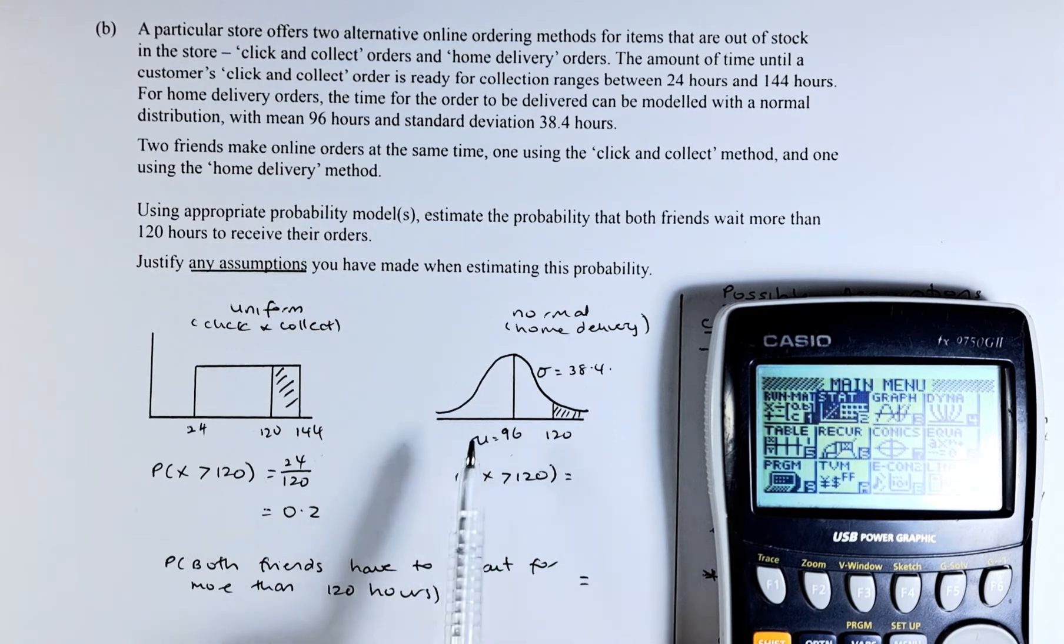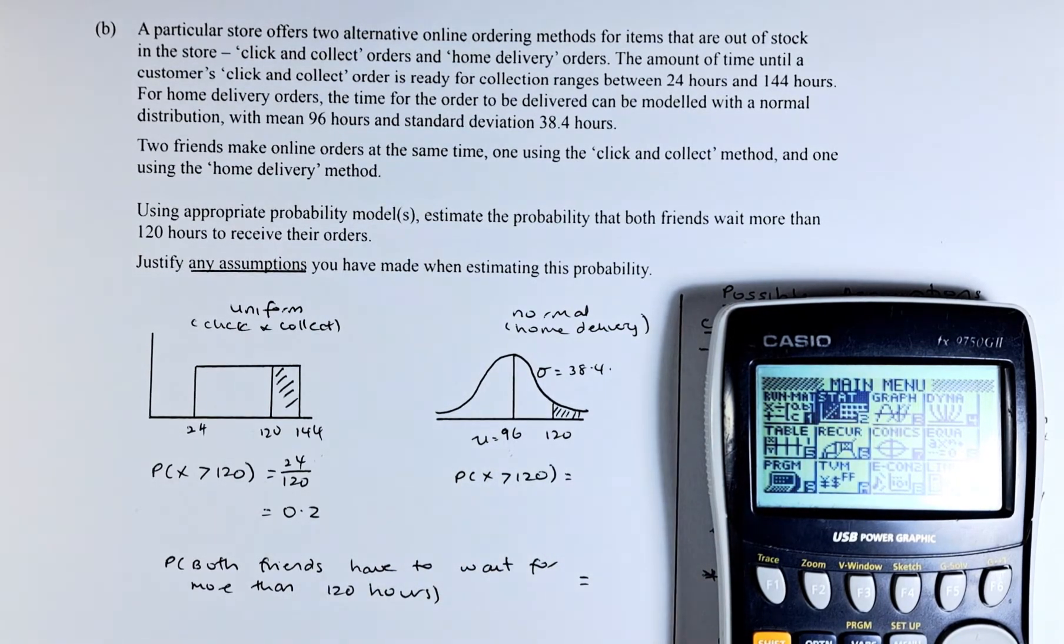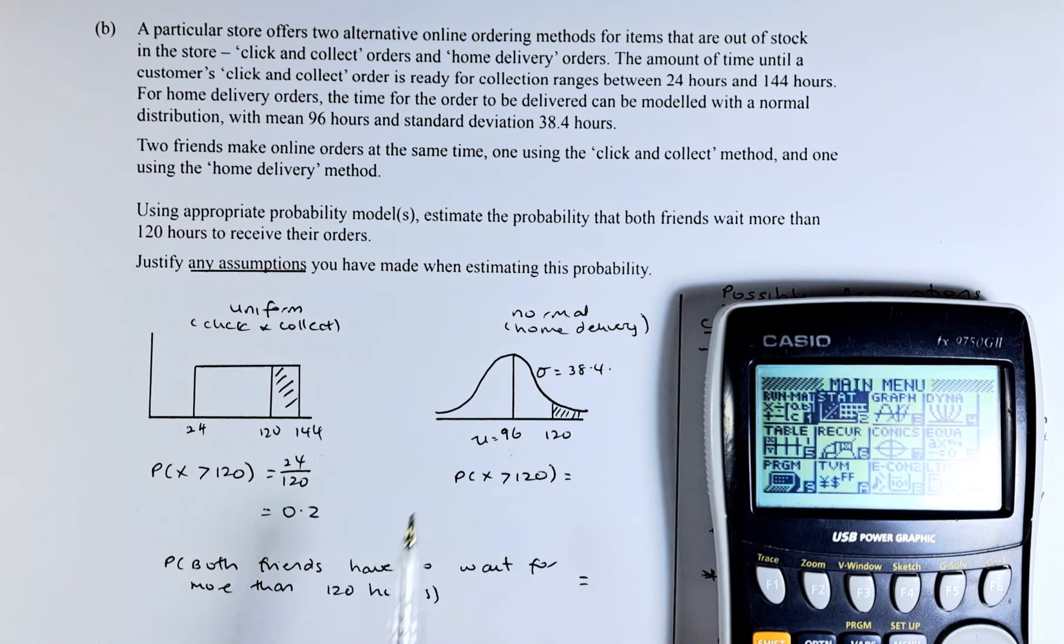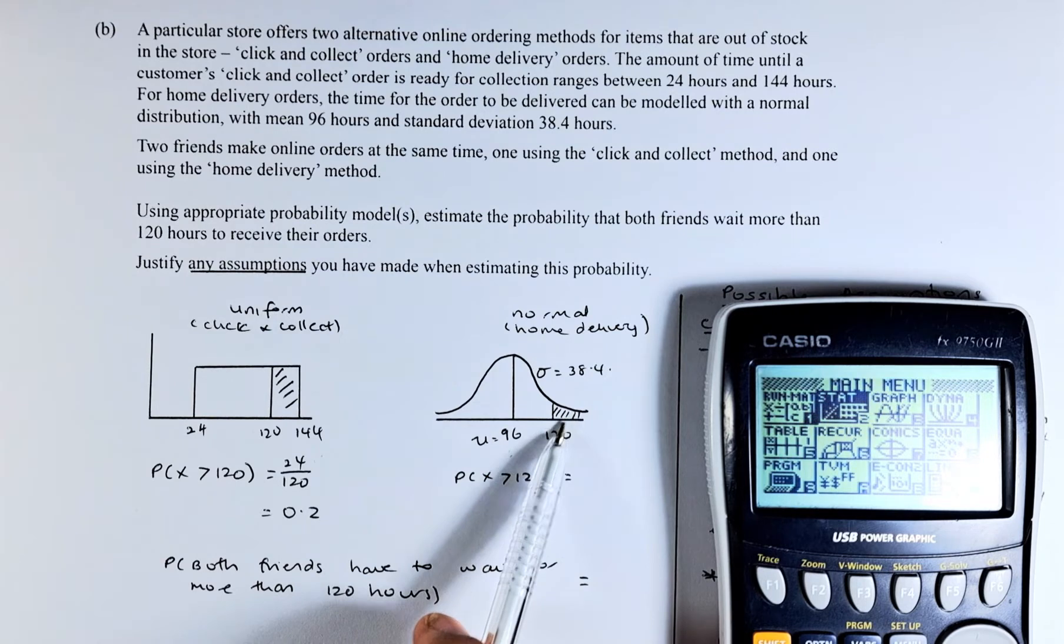To calculate using the normal distribution, the mean is 96, the σ is 38.4, we have to use the graphic calculator. They ask what the probability is more than 120, so that will be the area we're looking for.